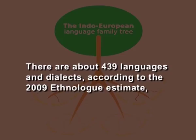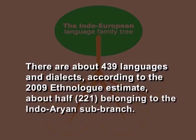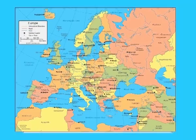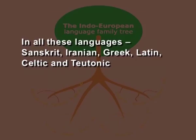The Indo-European languages are a family of several hundred related languages and dialects. There are about 439 languages and dialects according to the 2009 Ethnologue estimate. About half of them — about 221 — belong to the Indo-Aryan sub-branch. It includes most of the major current languages of Europe, the Iranian Plateau, and the Indian subcontinent.